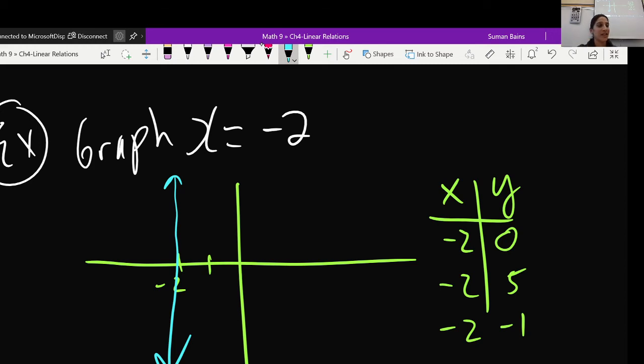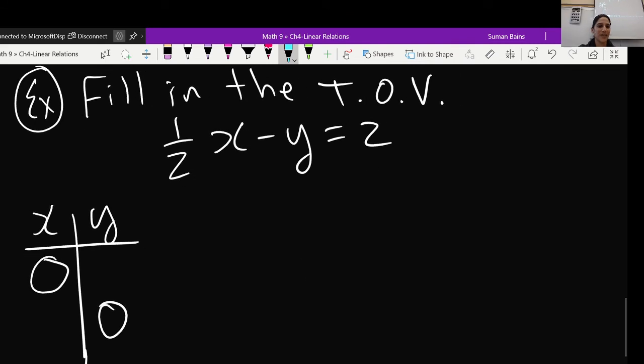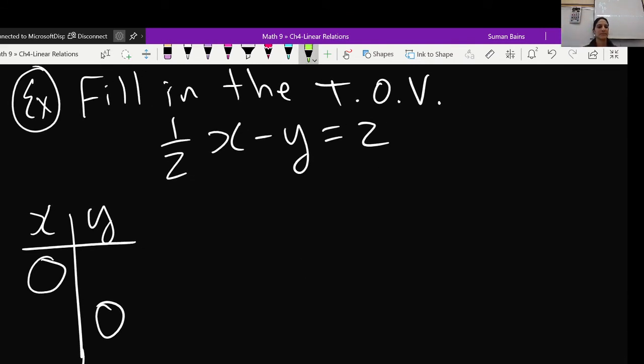Fill in the table of values. Tell me. If x is 0, what's our y value? So basically, that would be gone. We'd have negative y equals 2. How do we get rid of a negative? You multiply it by negative 1. So we do that by either dividing both sides by negative 1 or multiplying both sides by negative 1. You don't actually have to do it, but I want you to understand where it's coming from. So that's the reason why we actually end up with y equals negative 2.